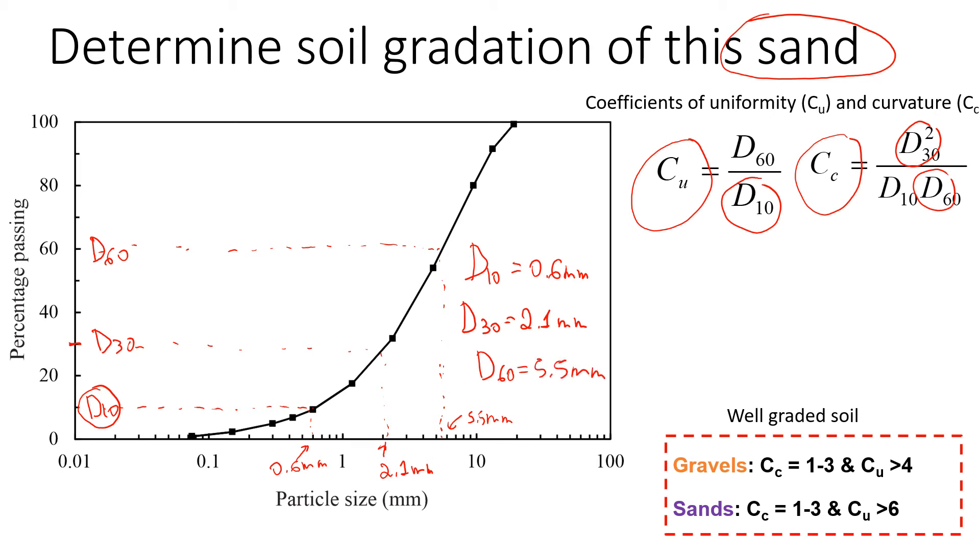Now we can calculate the coefficients. We'll start with the coefficient of uniformity. It will give us 5.5 divided by 0.6, approximately 9.2.